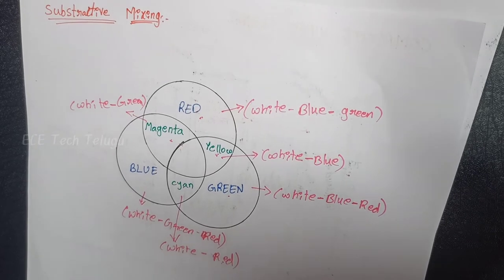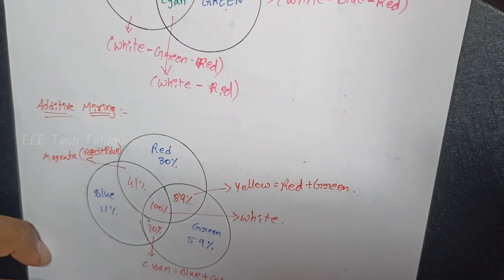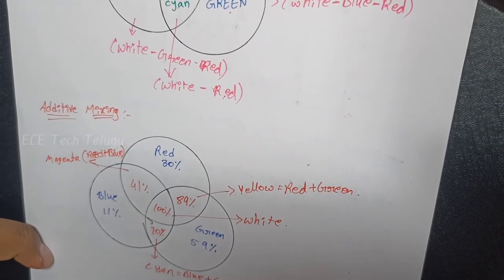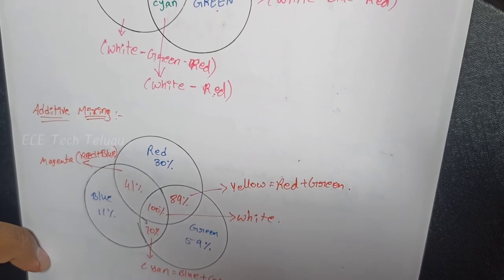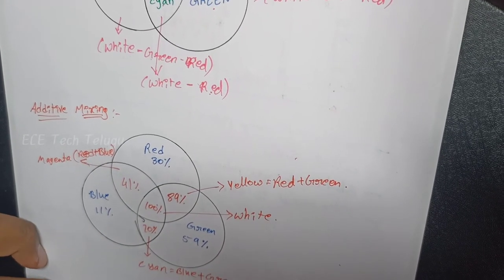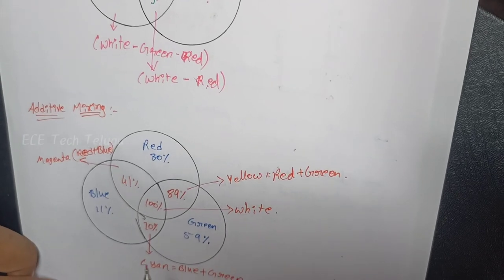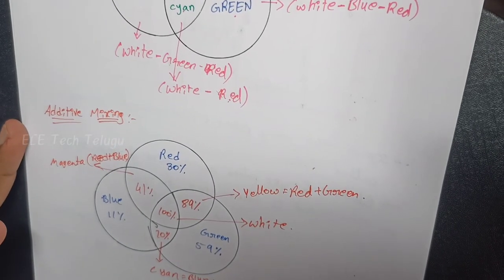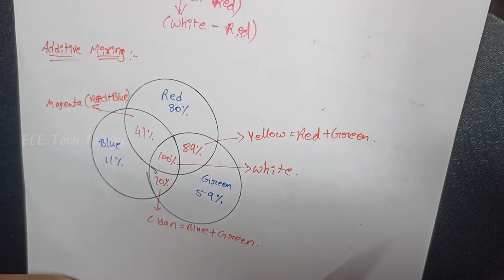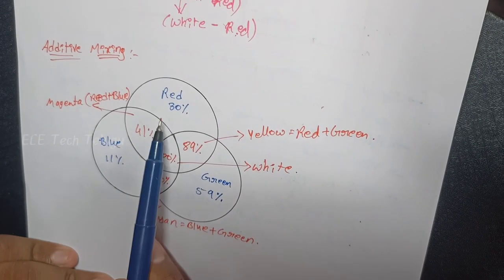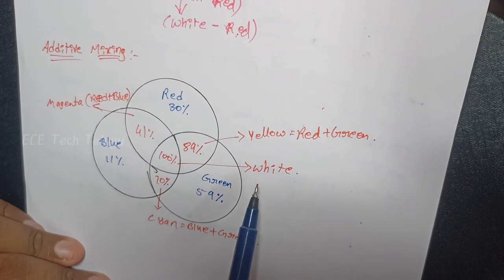Next is additive mixing. Addition of two primary colors to get another complementary color is called additive mixing. We add two primary colors together — that is additive mixing.